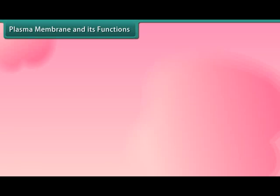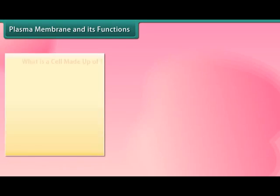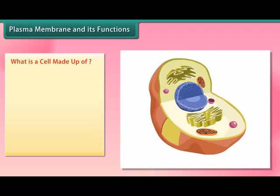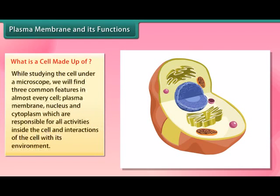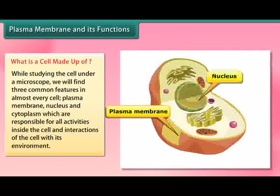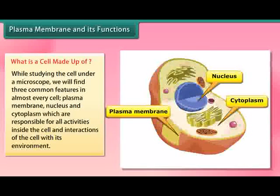Plasma membrane and its functions: What is a cell made up of? While studying the cell under a microscope, we find three common features in almost every cell: plasma membrane, nucleus, and cytoplasm, which are responsible for all activities inside the cell and interactions of the cell with its environment.